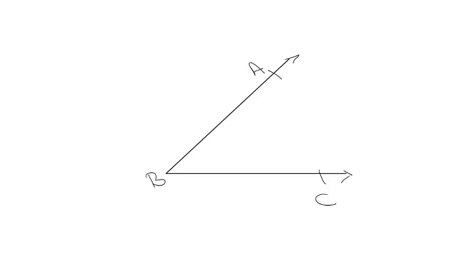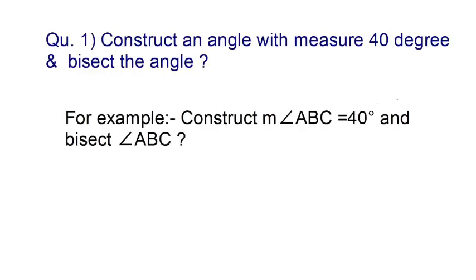To understand the concept of Angle Bisector, solve the following examples. Here, construct an angle with measure 40 degree and bisect the angle. Let us take an example, construct measure of Angle ABC is equal to 40 degree and bisect the angle ABC. So let's start see it.